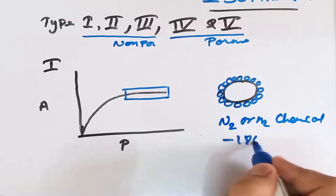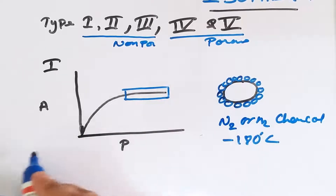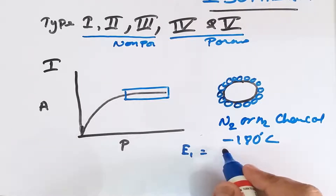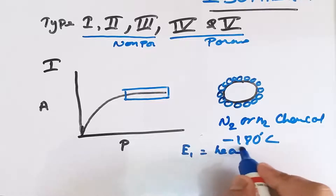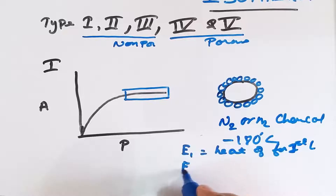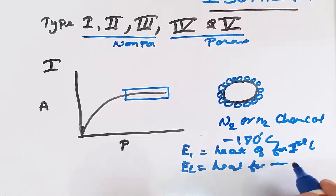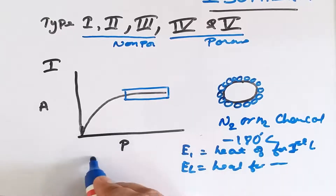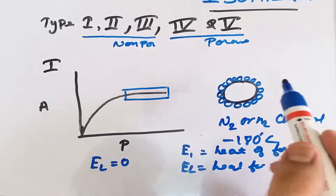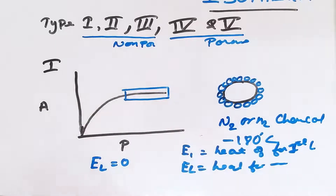For Type 1, adsorption of nitrogen or hydrogen on charcoal occurs at minus 180 degrees centigrade — it is monolayer adsorption. If E₁ is the heat of adsorption for the first layer and EL is the heat of liquefaction for the remaining layers, then for Type 1, EL equals zero because there is no formation of second or third layers — only monolayer adsorption takes place.